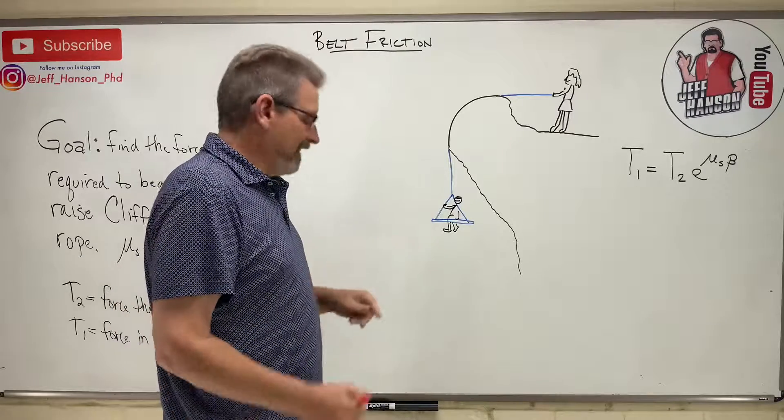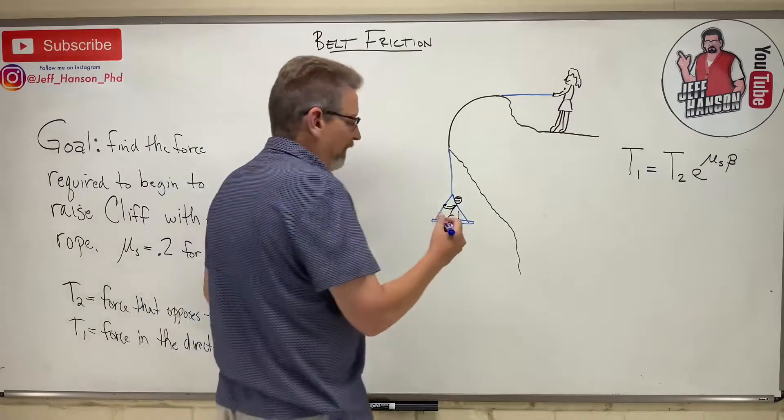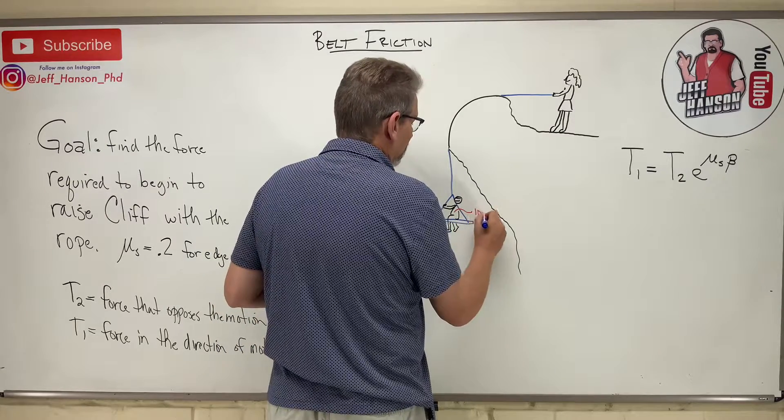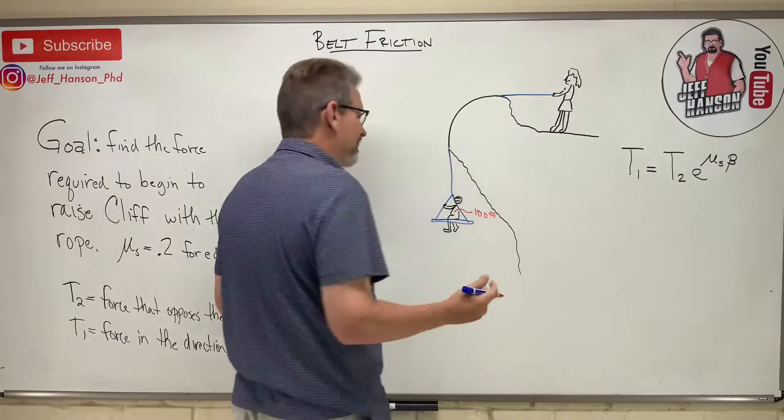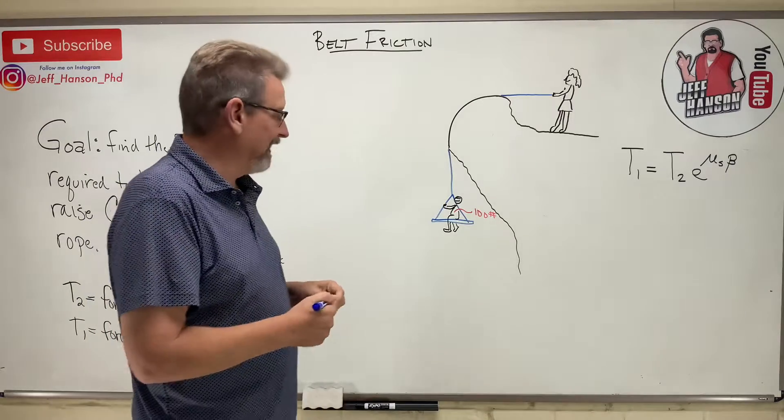Now Cliff is hanging over the precipice, and Cliff weighs 100 pounds. Clearly Cliff is a boy because, you know, he's not 200 pounds. You have to be 200 to be a man.